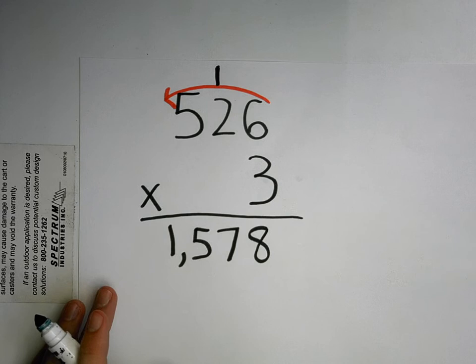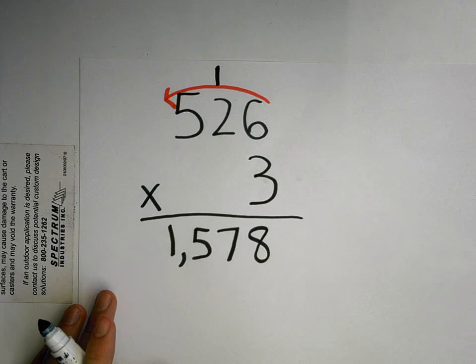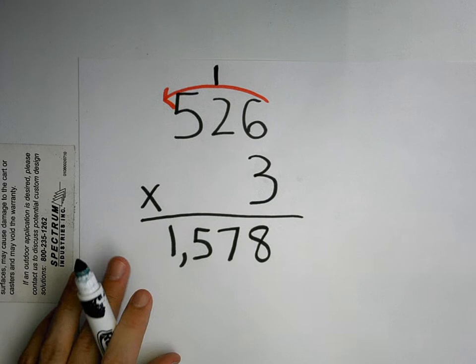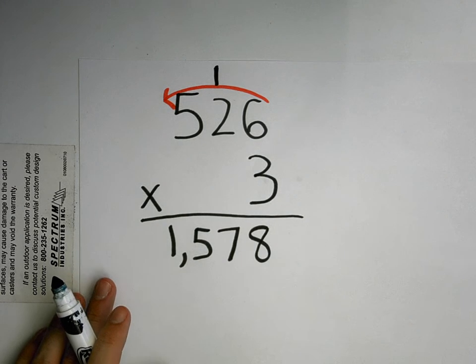So 526 times 3 equals 1,578. Really, all I'm doing is just adding a series of one-digit multiplications and putting the numbers together.